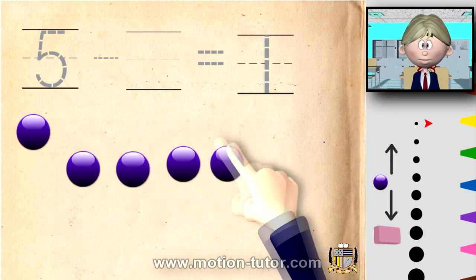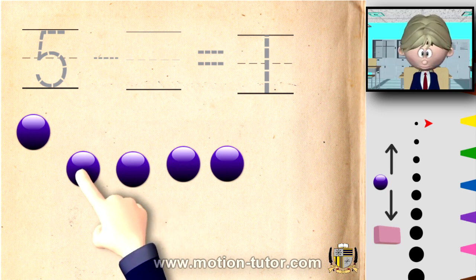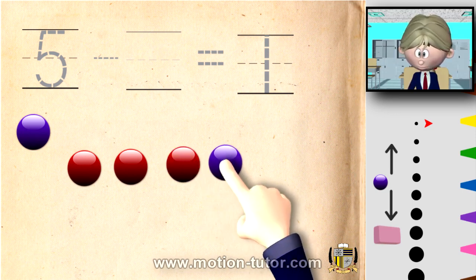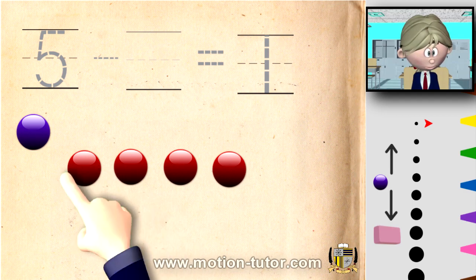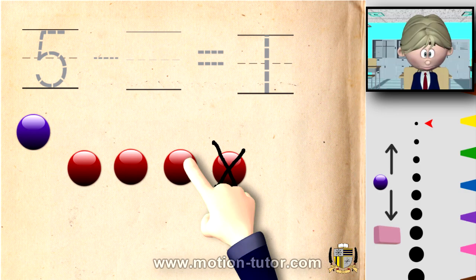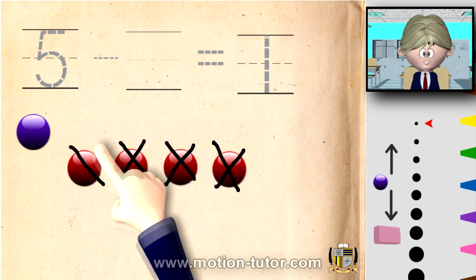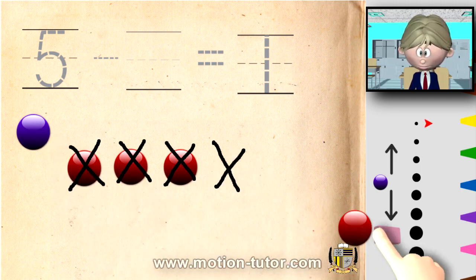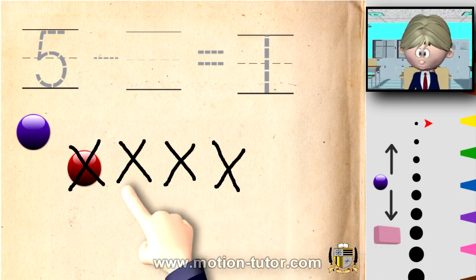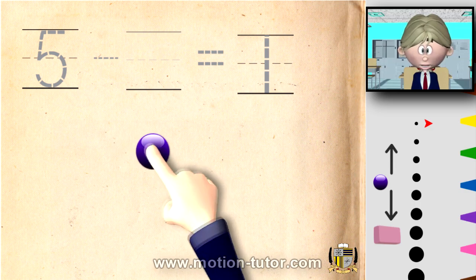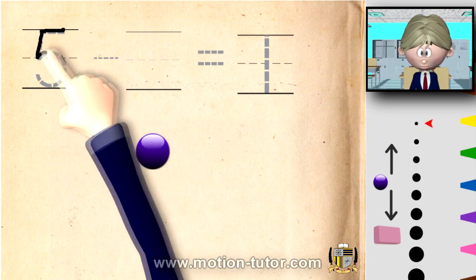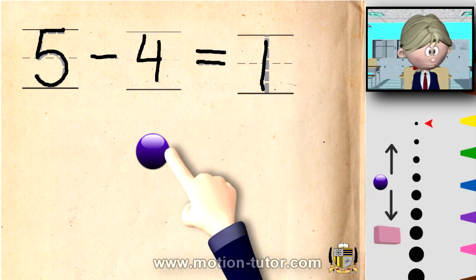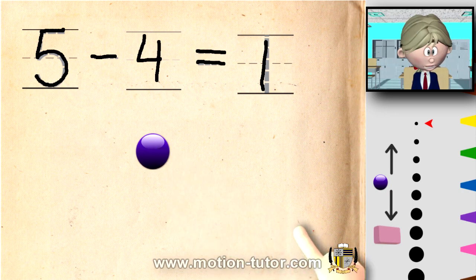How many are we taking away? We have one, two, three, four — we need to take these four away to have the one that's left over. So we get rid of them, and now we know it's four. Five take away the four reds is equal to one. Here it is. Let's do one more example.